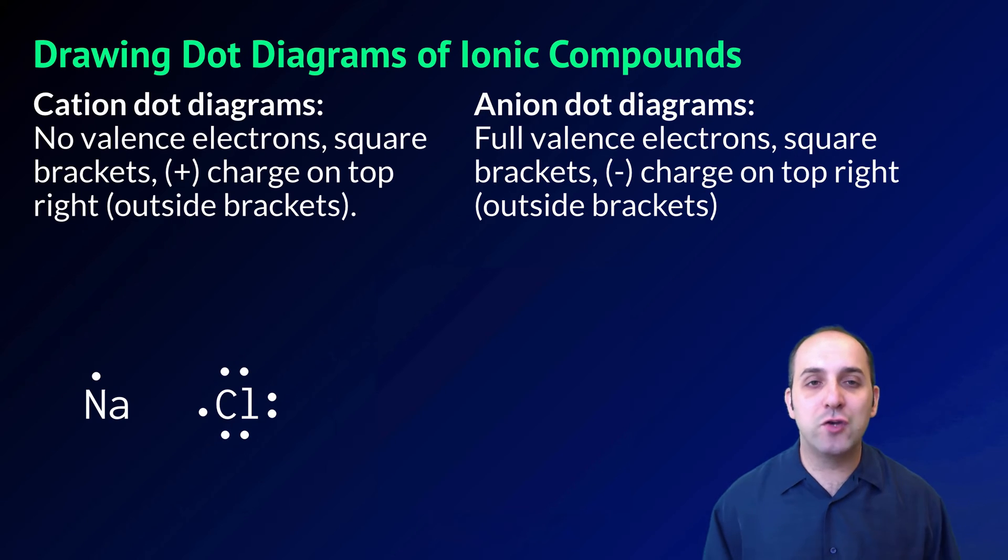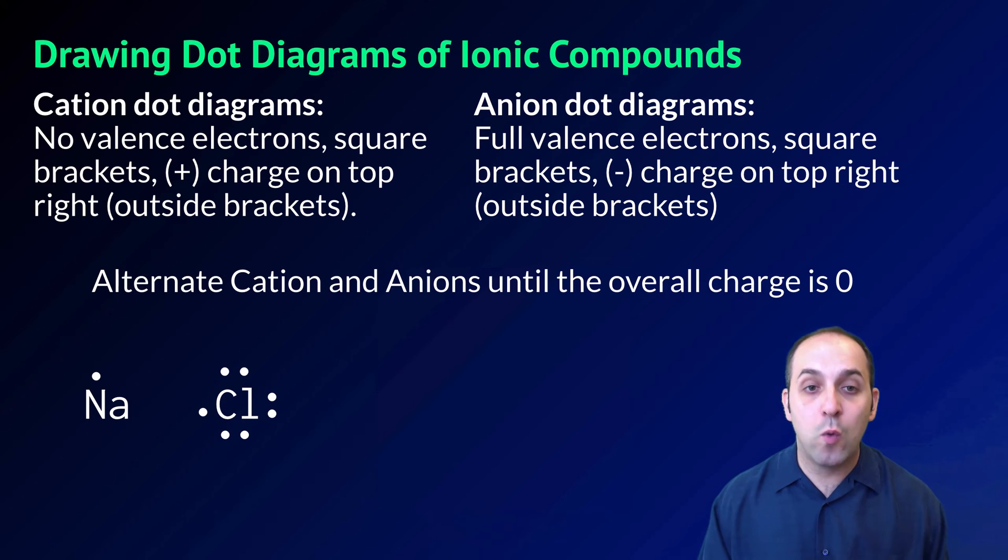When considering how to draw dot diagrams of ionic compounds, we should remember our discussion on how to draw ionic dot diagrams more generally. The cation dot diagram has no valence electrons, square brackets, and its positive charge outside of the brackets. The anion dot diagram will have all of its valence electrons, square brackets, and its negative charge outside of its bracket. We're then going to need to alternate cations and anions until the overall charge is zero.